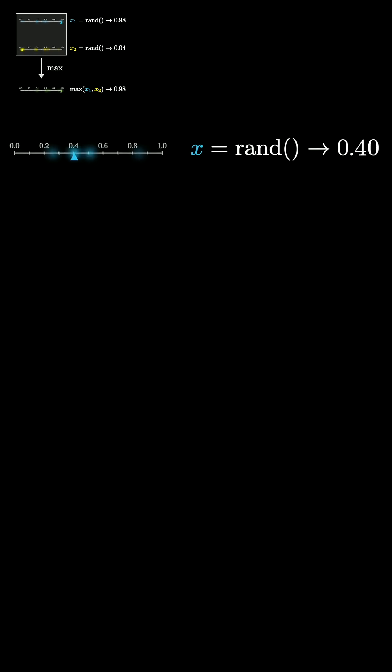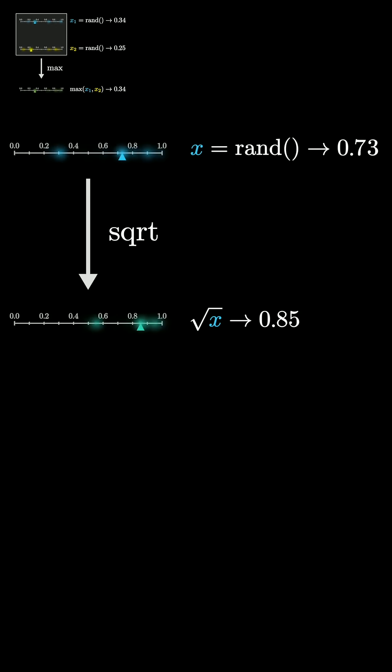A seemingly completely different thing you could do would be to take one of those numbers and compute its square root. When you square a number that's smaller than 1, it becomes smaller. So that means when you take its square root, it becomes bigger. So this is another process that would give you a random value with a bias towards being larger.